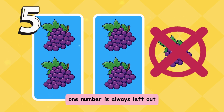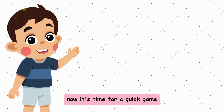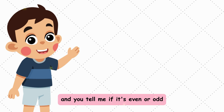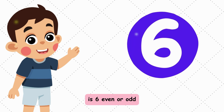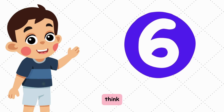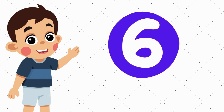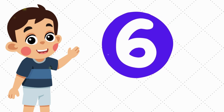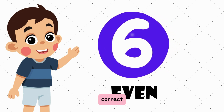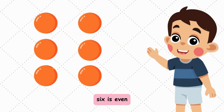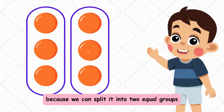Now it's time for a quick game! I'll show you a number and you tell me if it's even or odd. Is six even or odd? Correct! Six is even because we can split it into two equal groups.